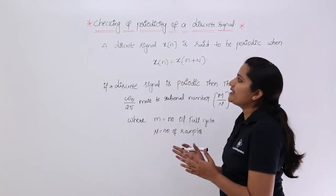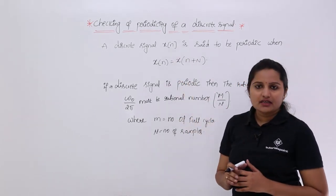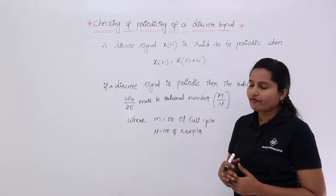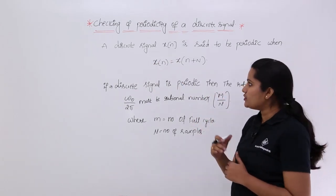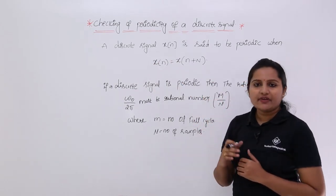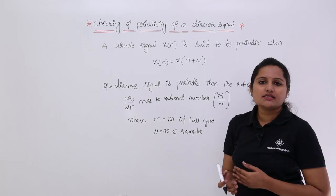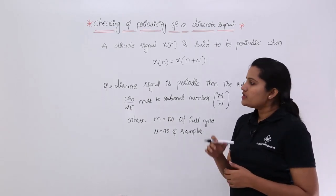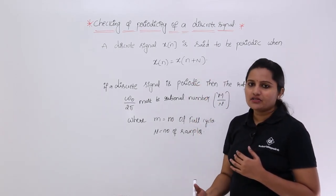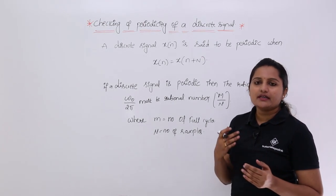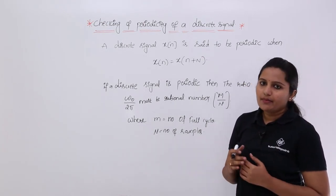A discrete signal x(n) is said to be periodic when it satisfies the condition x(n) = x(n + N). This is very similar to the continuous signal periodicity condition — for every n, the signal needs to repeat over the time interval N to be considered periodic.